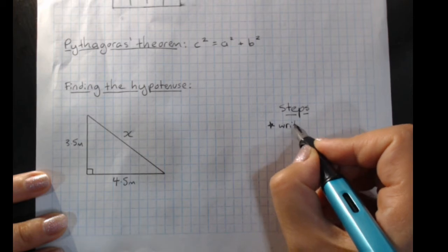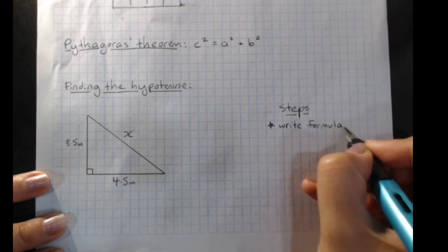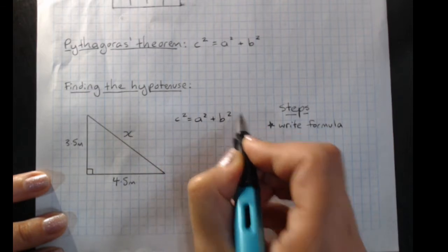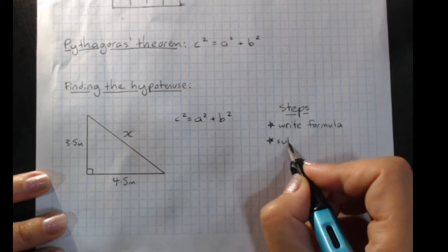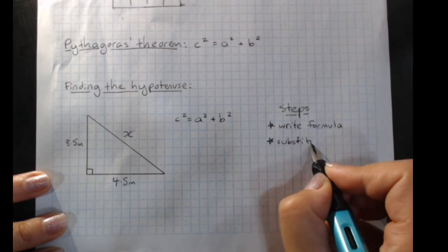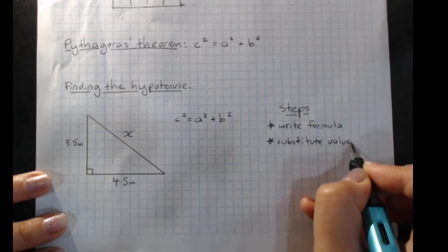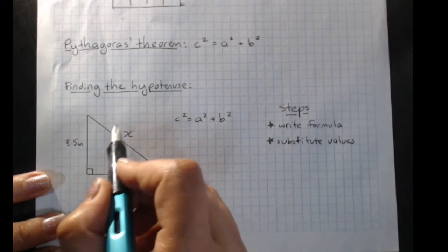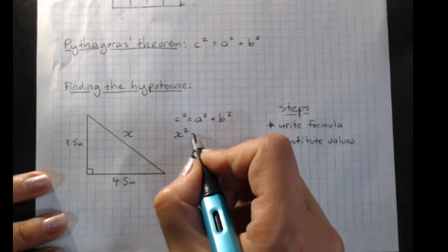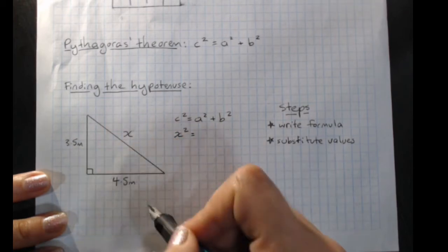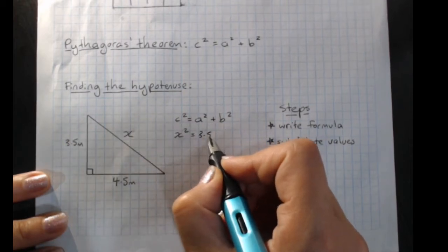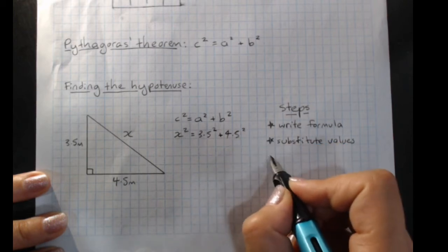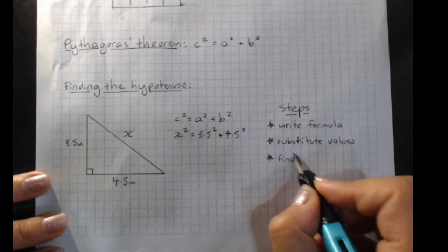So the first one is to write the formula. We start every Pythagoras' theorem question with c squared equals a squared plus b squared. Then our next step is to substitute in the values that we know. And we get those from the diagram. C is the hypotenuse. It's the longest side. They've called it x, so we'll call it x and we want it squared. A and b, it doesn't matter which is which. Let's make this a 3.5 and we've got to square it. Plus b 4.5 and we'll square it.